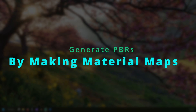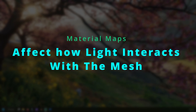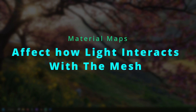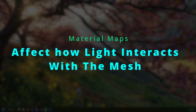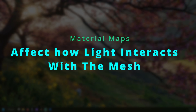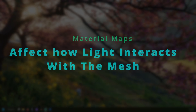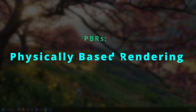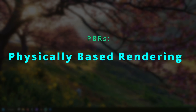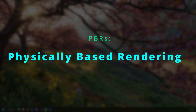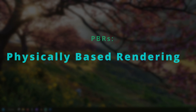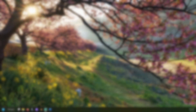Material maps let you add more than just color to your mesh. They affect how light and reflections interact with your object. They help it appear less flat and can provide the appearance of depth and shadow to the surface of a flat mesh. Usually, these materials are referred to as PBRs, or materials with physically-based rendering. PBR basically means materials that express how light physically interacts with objects.